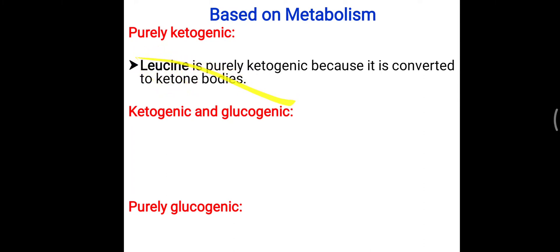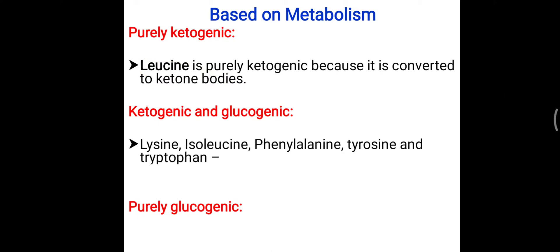Leucine is the only purely ketogenic amino acid. For amino acids that are both ketogenic and glucogenic, you have to remember phenylalanine, tyrosine, and tryptophan — three aromatic amino acids — as well as lysine and isoleucine. These five amino acids have parts that go to ketone body formation and parts that go to glucose molecule formation.